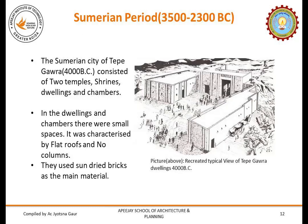The Sumerian cities were simple in terms of planning. They consisted of generally two temples or a temple complex with a shrine, dwellings and chambers. The dwellings and chambers were small spaces characterized by flat roofs with no columns. They used sun-dried bricks as the main material because they lived along the river valley, making it the most easily available material.